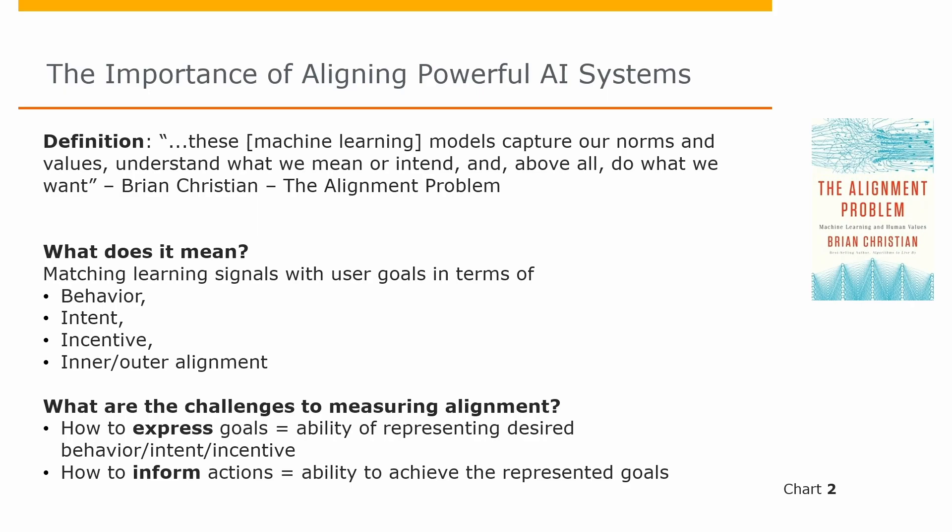We think that's a very difficult problem. A lot of people are working on it — philosophers, computer scientists. Our take here is a typical computer science approach: reductionism. We are trying to frame this as two challenges. One: how to express these goals — what are the goals and how to express them in a way that represents behavior, intent, and incentive. And second: how to inform the actions. Reinforcement learning ends up finding a policy that will optimize your reward, which hopefully will align with your goal. This is our approach — expressivity and informativeness converted into metrics.